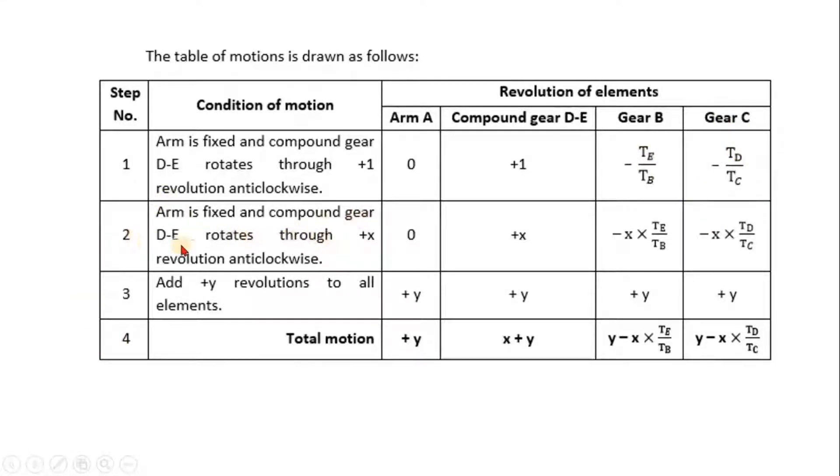These are simple gears so you won't have that multiplication of the teeth of the other gear in this case. Arm is fixed now and the gear DE rotates through +x revolutions anticlockwise, so this becomes +x. So here these two gears will rotate in clockwise direction, so we have -x × TE/TB and this is -x × TD/TC.